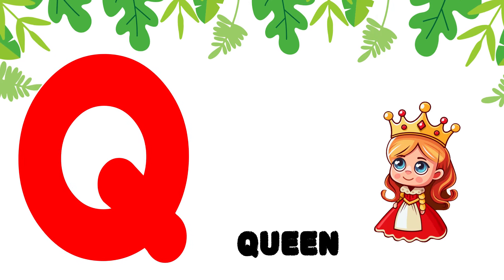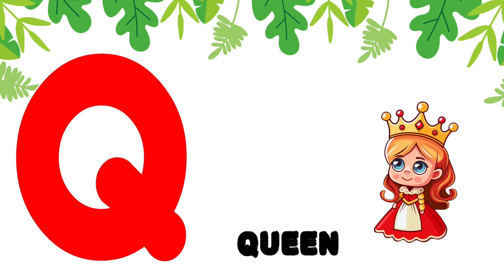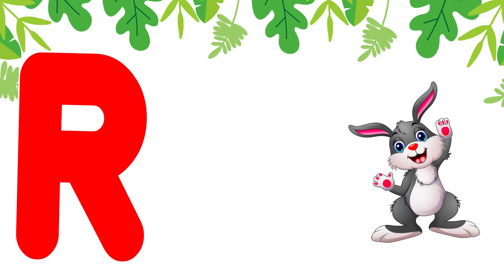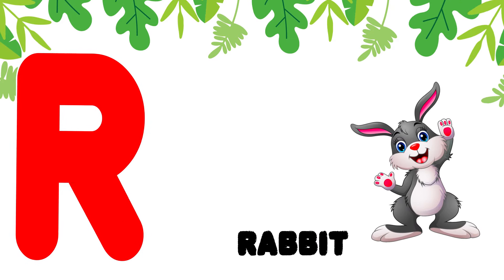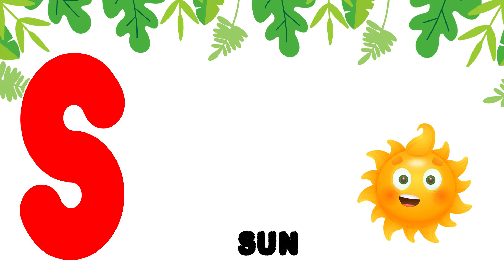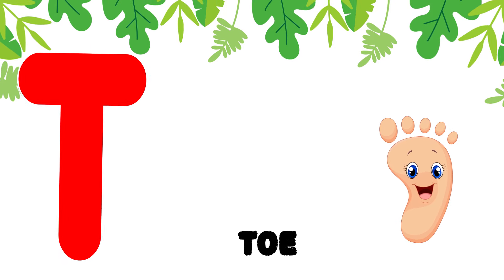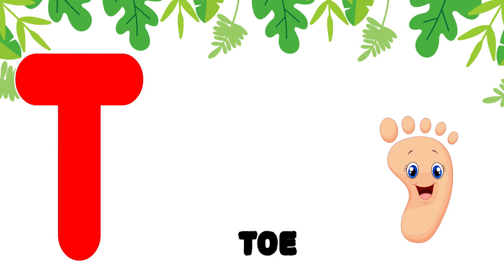Q is for queen. Q, queen. R is for rabbit. R, rabbit. S is for sun. S, sun. T is for toad. T, toad.